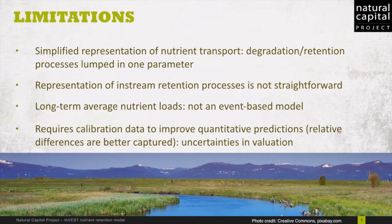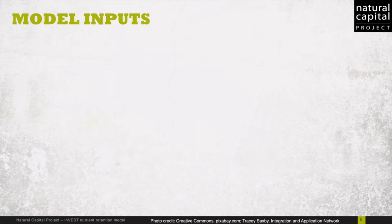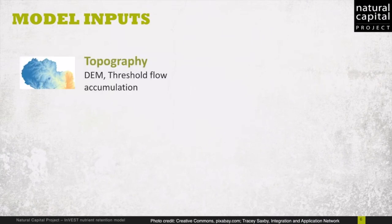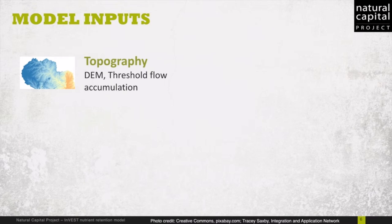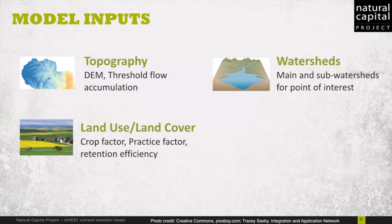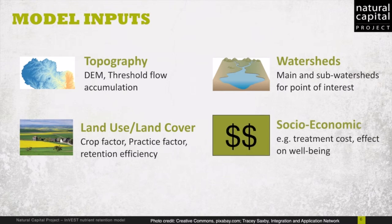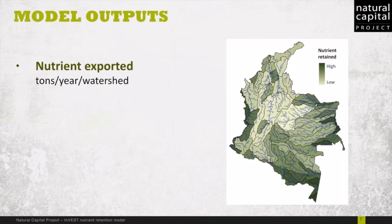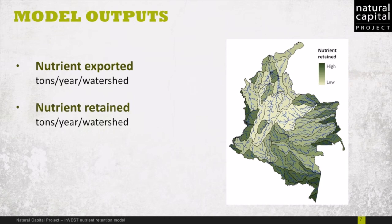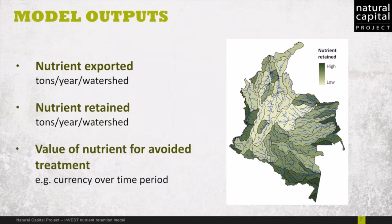This will have consequences also for the valuation step. Moving on to inputs — what do we need to run the model? First, information about topography, the digital elevation model or DEM; land use land cover and the spatial distribution; the watersheds — areas that drain to a single point in the landscape — and then socio-economic data to inform the valuation step. With these inputs, the model will produce the nutrient exported for each subcatchment and the nutrient retained, as well as the value of the nutrient retained in terms of avoided treatment, for example.